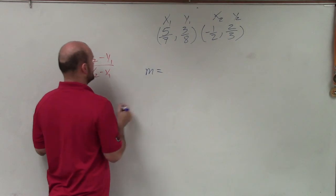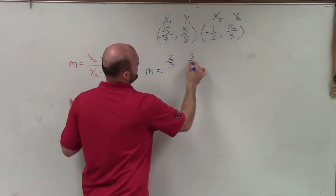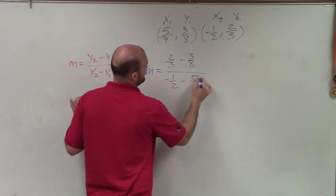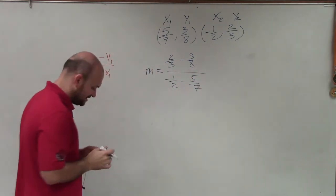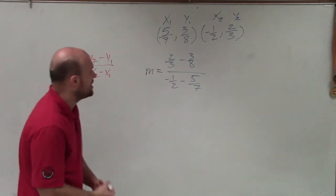So now, all I'm simply going to do is plug them into my formula. So I'll say y2, which is 2/3 minus 3/8, divided by negative 1/2 minus 5/7. Now, the fun part about this problem is we do not have common denominators. Therefore, I need to find common denominators for each problem.